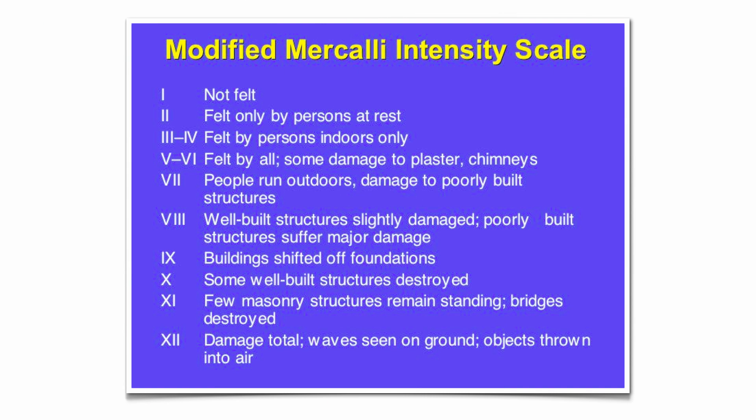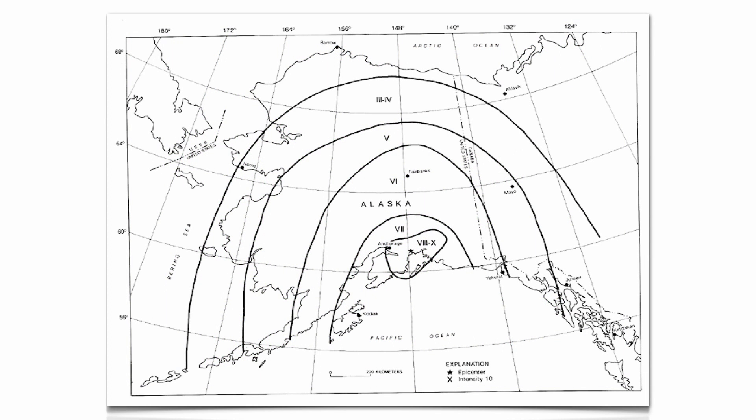We have two scales that we go by. The modified Mercalli scale measures the amount of damage created and goes from 1 to 12. Here's a map of the 1964 earthquake in Alaska. Right in the center of that map, you see a little star just to the eastern part of Anchorage — that is where the 1964 epicenter was found. The Roman numerals go up to as much as 10 on the Mercalli scale, and as you get farther and farther away, those Roman numerals get smaller. So you go from a 10 down to a 7, 6, 5, 4, and 3 the more north you go. The greatest damage on the Mercalli scale is right at the epicenter.